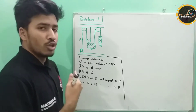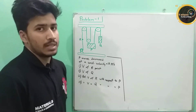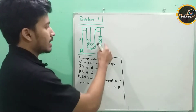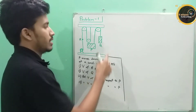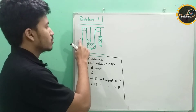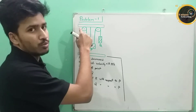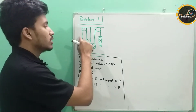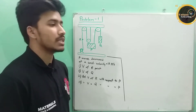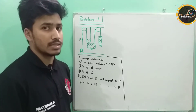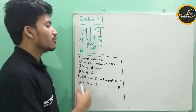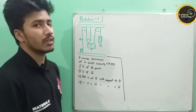Therefore, we have a normal difference. We are going to take a look at the P block, then the Q block. If we denote the R point, we can take a look at the R point. So we have four questions that we have to consider. First of all, the velocity of the R point.